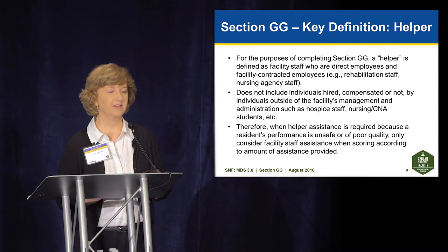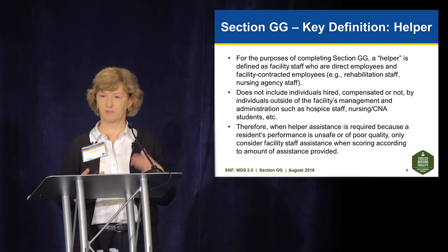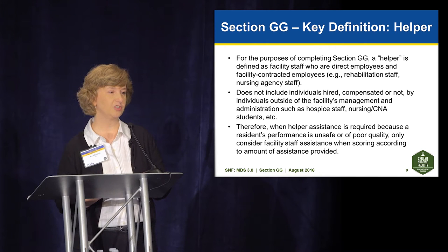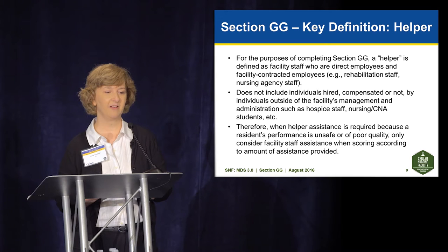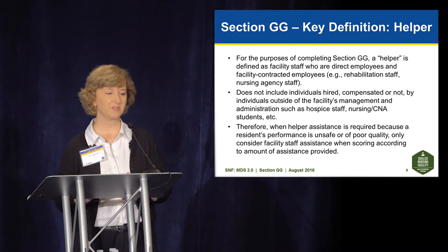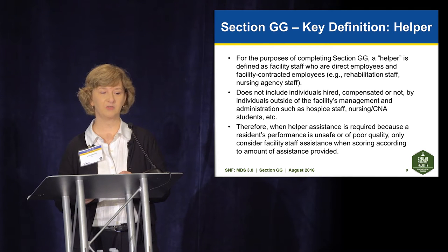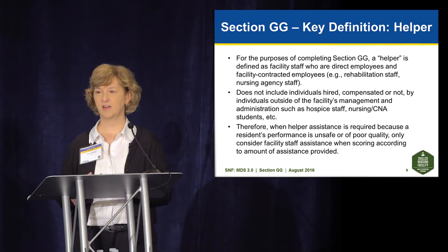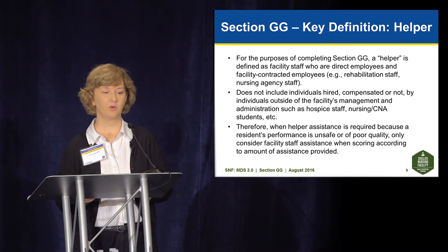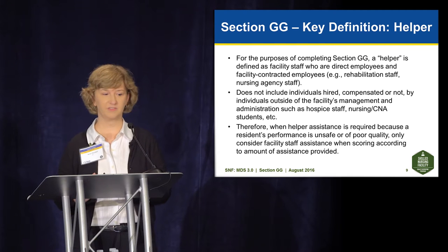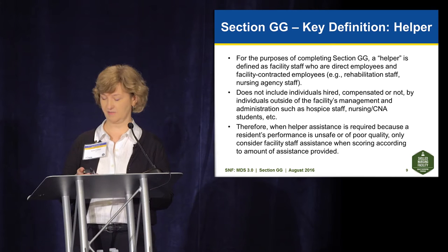One important thing to highlight is the definition of helper. For the purposes of completing Section GG, a helper is defined as facility staff who are direct employees and facility contracted employees — that is, rehabilitation staff and nursing agency staff. It does not include individuals hired, compensated or not, by individuals outside the facility's management and administration, such as hospice staff, nursing, CNA students, etc. Therefore, when helper assistance is required because a resident's performance is unsafe or poor quality, only consider facility staff assistance when scoring the amount of assistance provided.